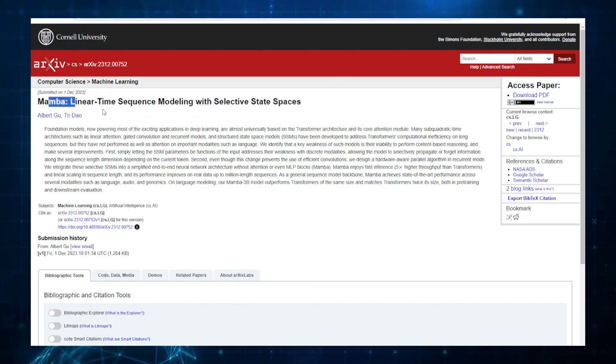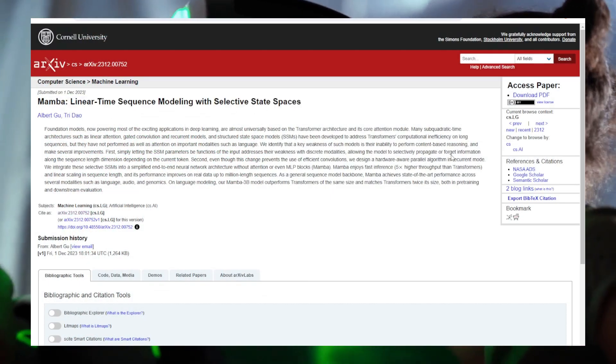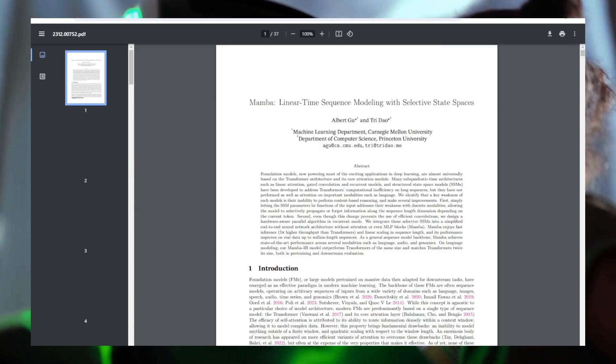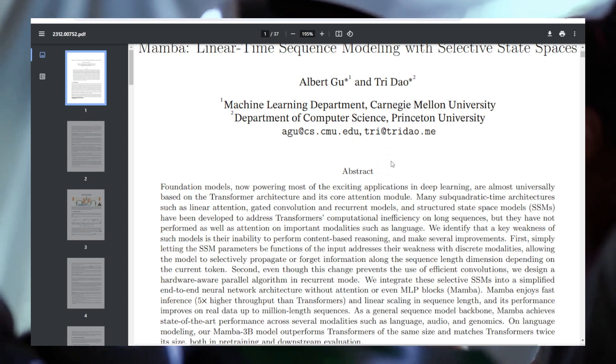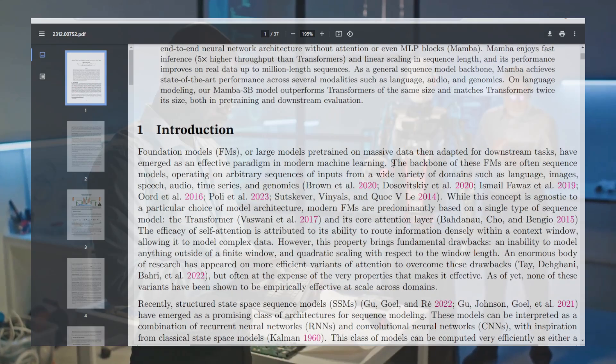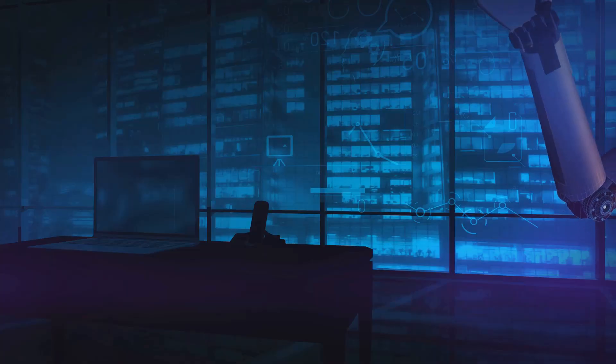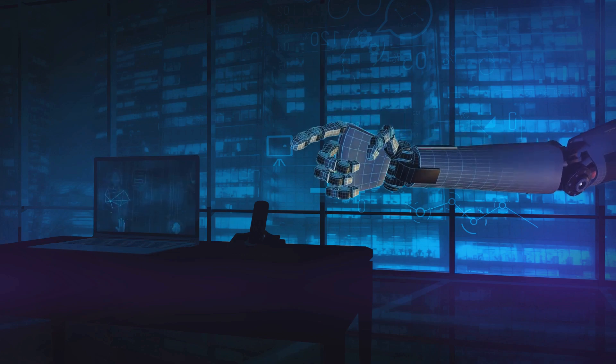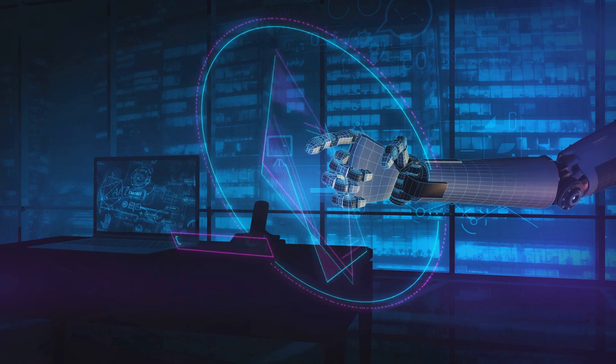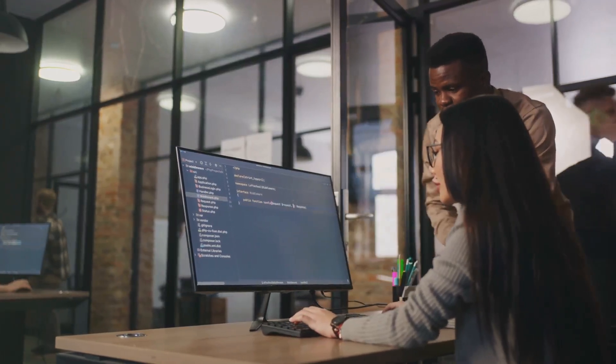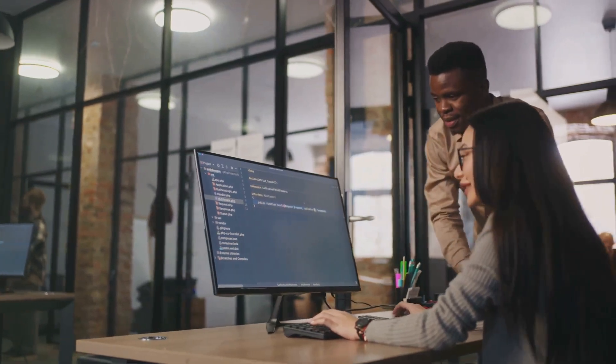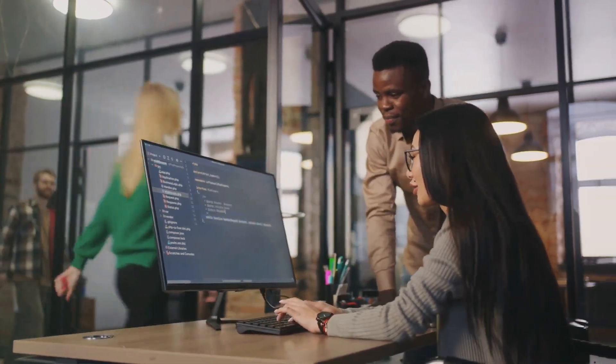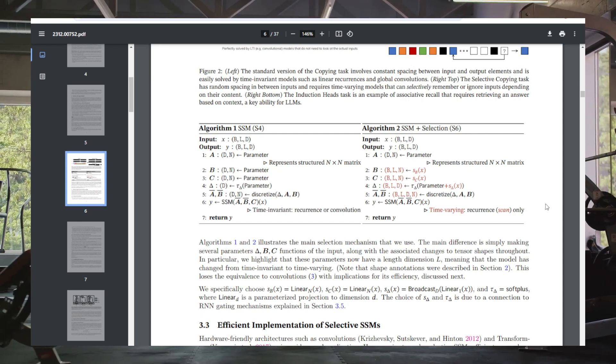Mamba, as we've learned, is a cutting-edge technology that aims to push the boundaries of artificial intelligence. It interacts with LLMs in a way that enhances their capabilities and takes them to the next level. Think of Mamba as a catalyst, enhancing the chemical reaction without being consumed in the process. It amplifies the strengths of LLMs, allowing them to generate more accurate,